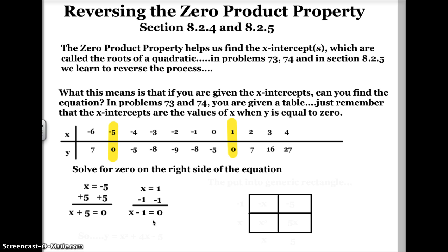Now, to find the equation, I'm going to put that in my generic rectangle and multiply it out. I'll have x minus 1, and I'll multiply that times x plus 5. When I do that, I get an x squared in this rectangle, I get a 5x down here, a negative x up here, and a negative 5 up there in the upper right.